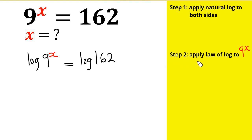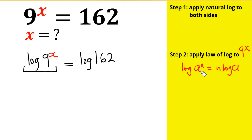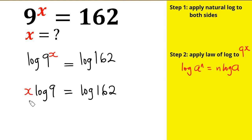What I'm going to do next is to apply the log power rule to 9 raised by the power of x. That rule says log of a raised by power of n equals n·log a. So now I have x·log 9 equals log 162.